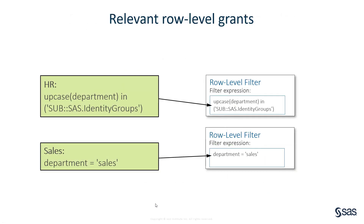We've set up row-level filters for the HR department and the sales department. For the HR department, the row-level filter expression says that the uppercase department column in the table has to be one of the values in the user's identity groups — a comma-separated list of all the groups the current user is a member of. If the department row matches one of those groups, the user can see that row; otherwise they won't. The expression for the sales department is simpler: we just say we'll only show rows where department equals sales. You can do something much simpler like that.